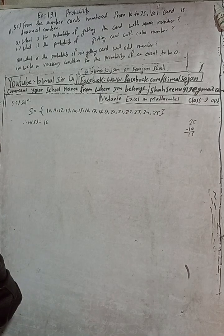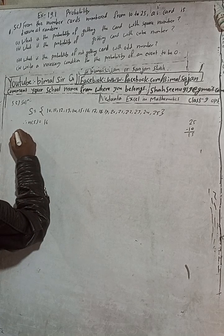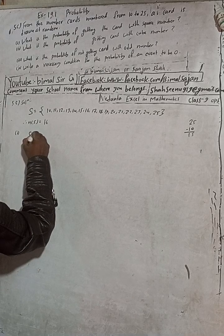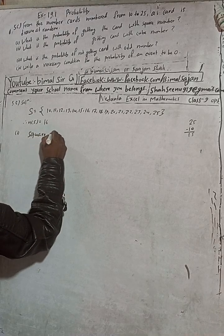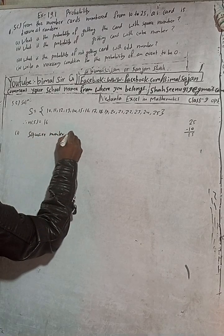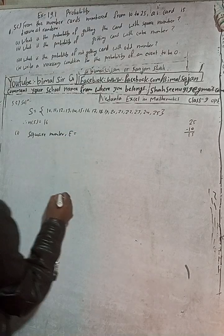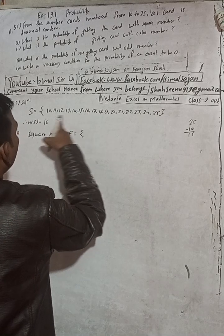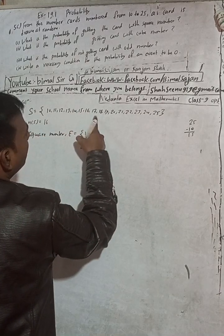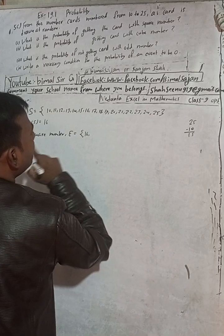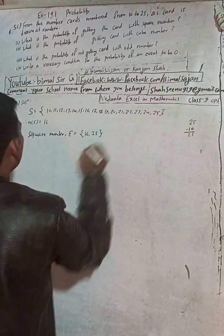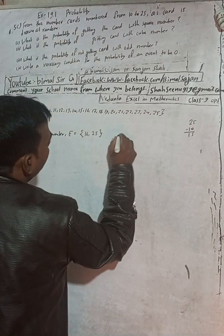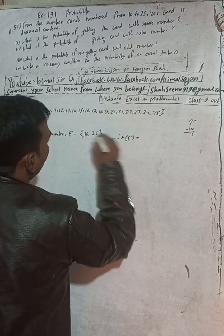Number 1: What is the probability of getting the card with the square number? The square numbers between 10 and 25 are: 4 squared is 16, and 5 squared is 25. So the square numbers are 16 and 25. That means the event E = {16, 25}, and n(E) = 2.